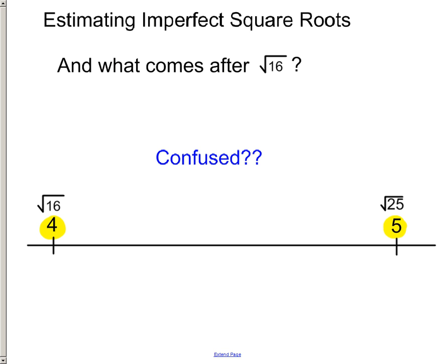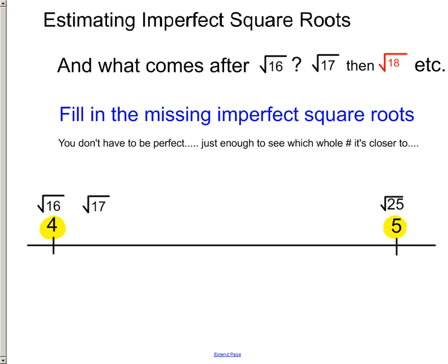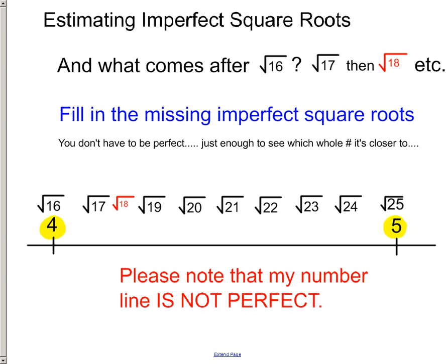In the same way, what comes after the square root of 16? The square root of 17, and then the square root of 18, and now we're going to put these square roots onto this number line. So, it doesn't have to be perfect. The square root of 17 is going to be a little bit bigger than the square root of 16, and then the square root of 18 and the square root of 19 comes next. We just start filling it in there.